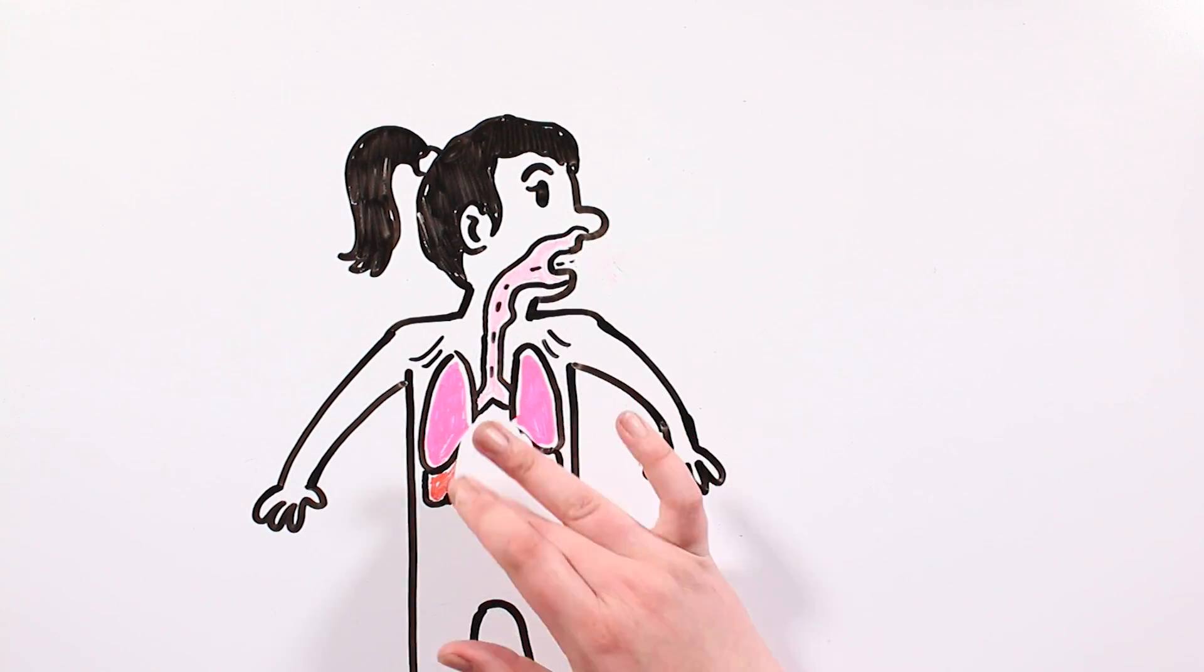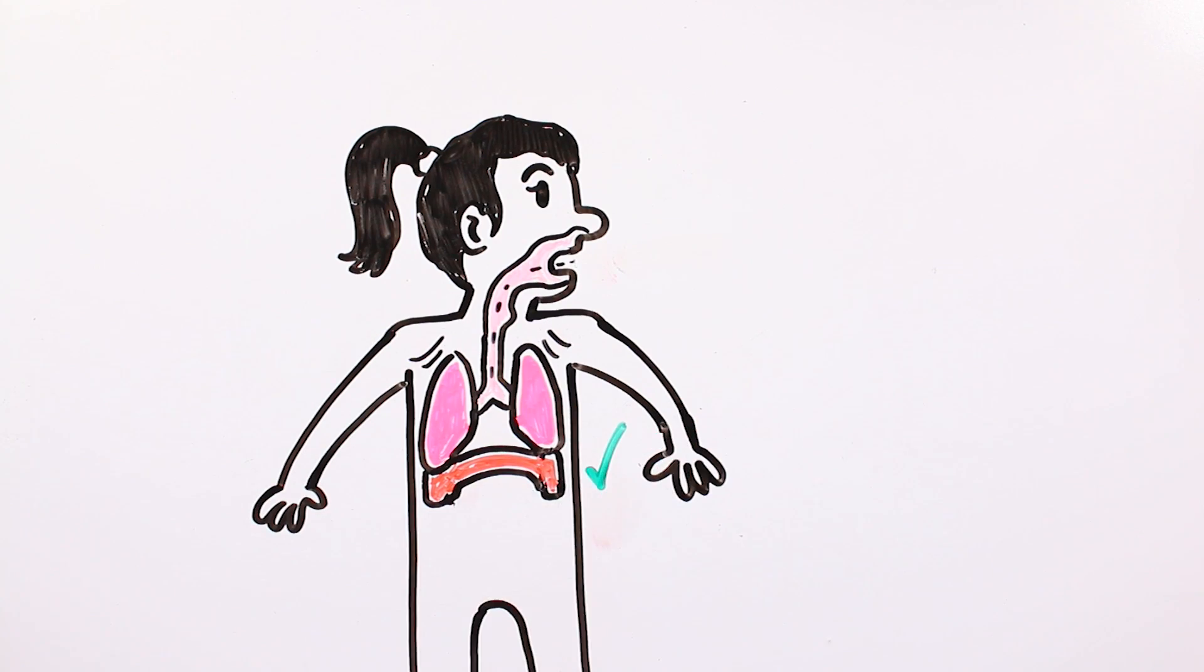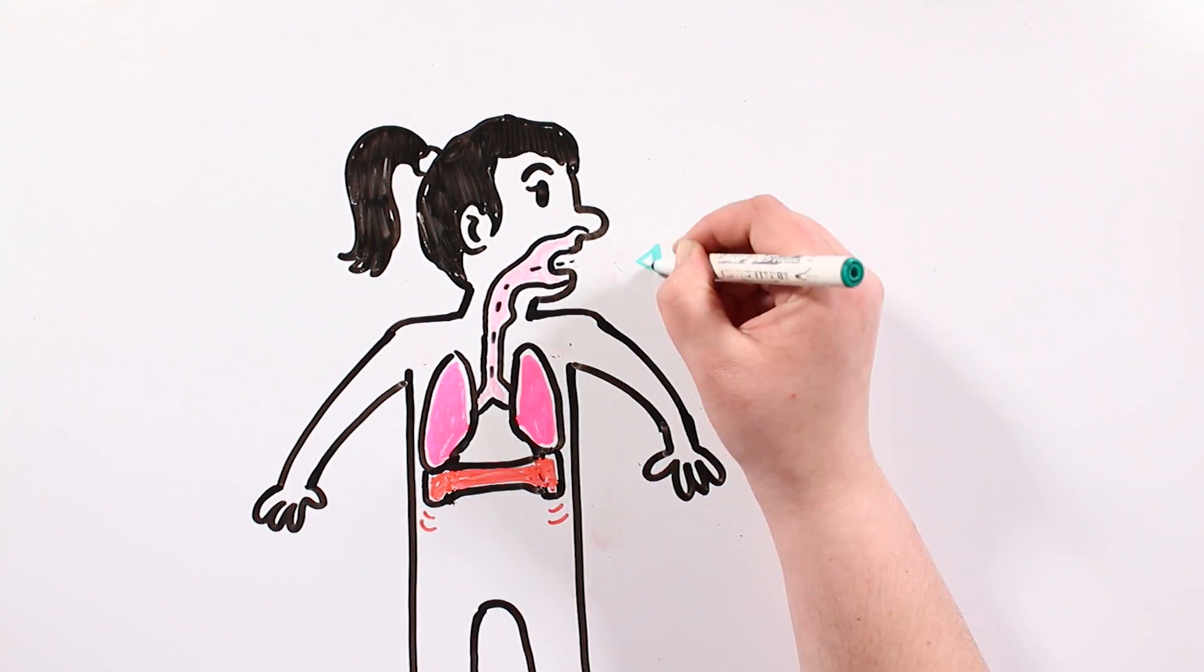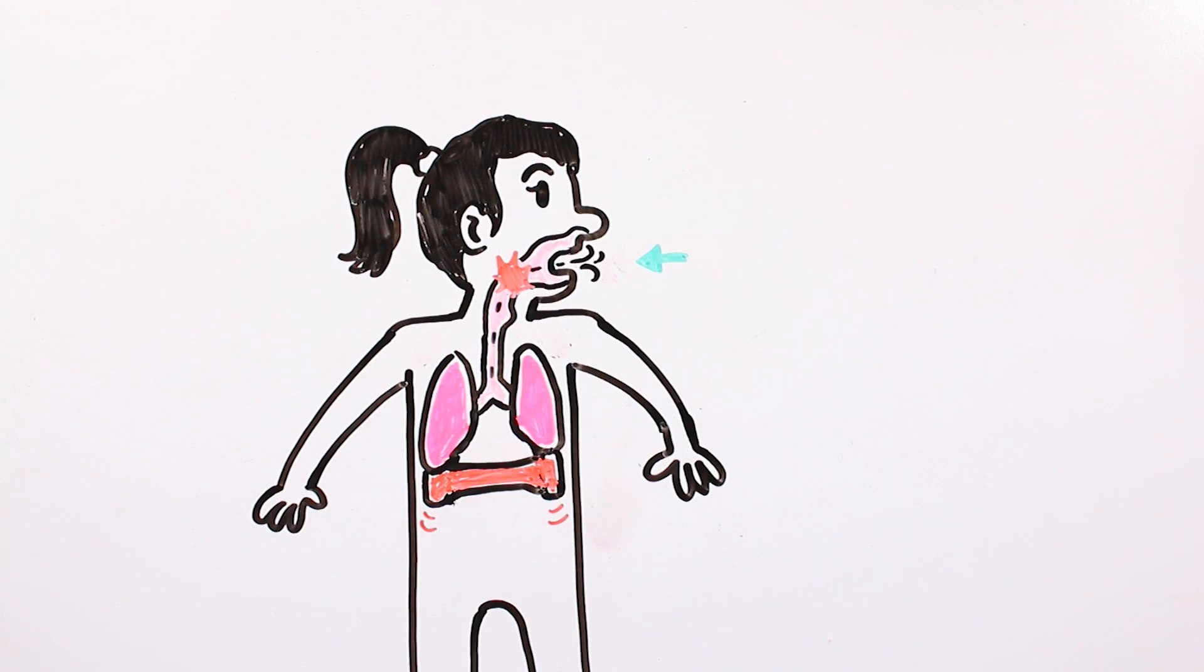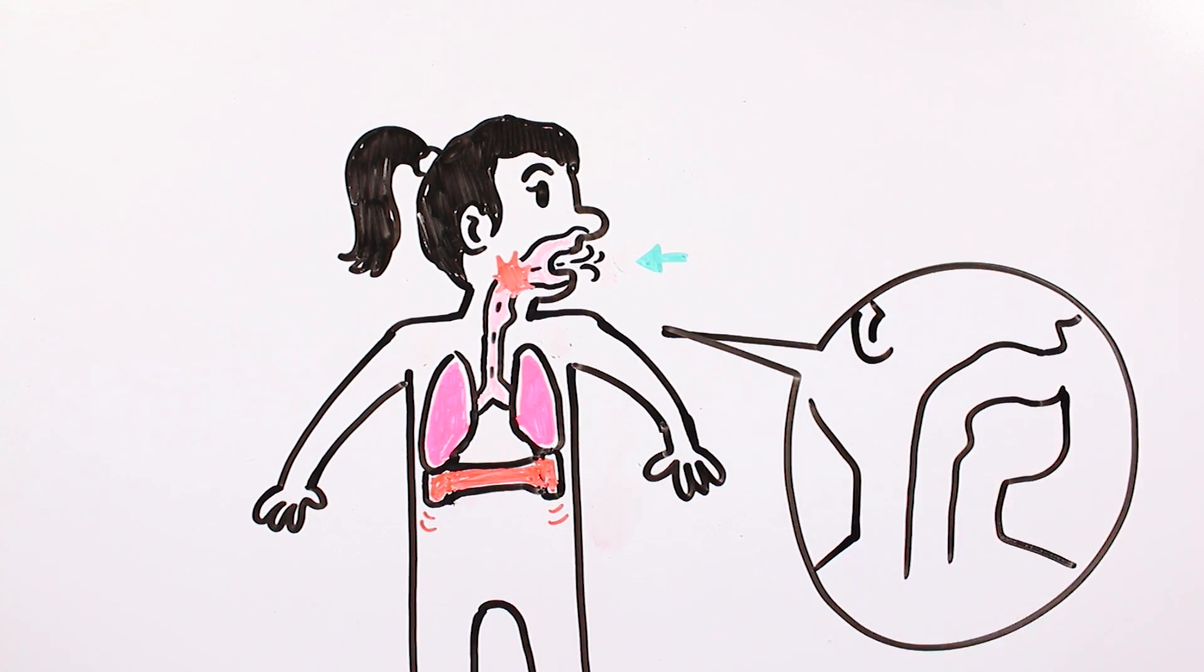It usually works very well, but sometimes it can get irritated. When this happens, the diaphragm descends brusquely, making air coming to our throat abruptly.